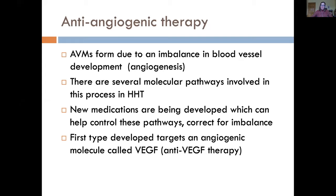AVMs form due to an imbalance in angiogenesis. There are a number of molecular pathways involved in this process, which makes it complicated but interesting because there are many pathways we could target to treat HHT. New medications are being developed — some repurposed from other diseases, some developed specifically for HHT. The first anti-angiogenic therapy of interest for HHT targeted a molecule called VEGF, and the anti-VEGF treatment we have available with the most experience is bevacizumab, also known as Avastin.